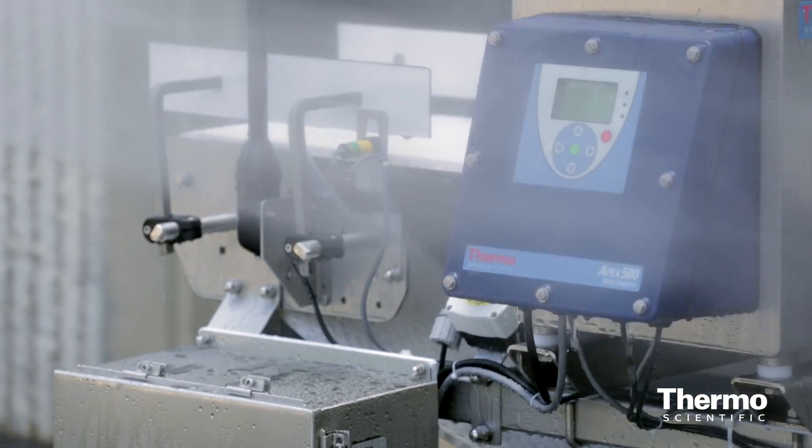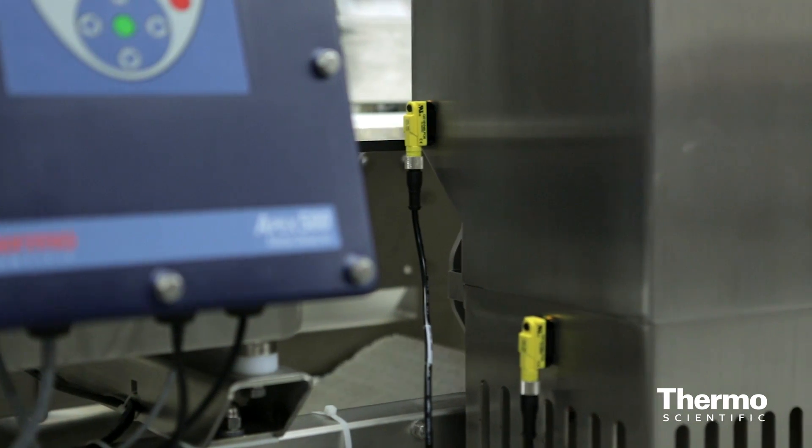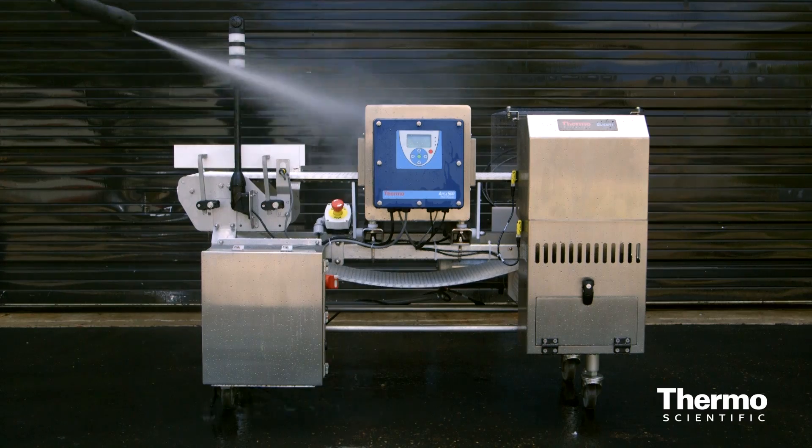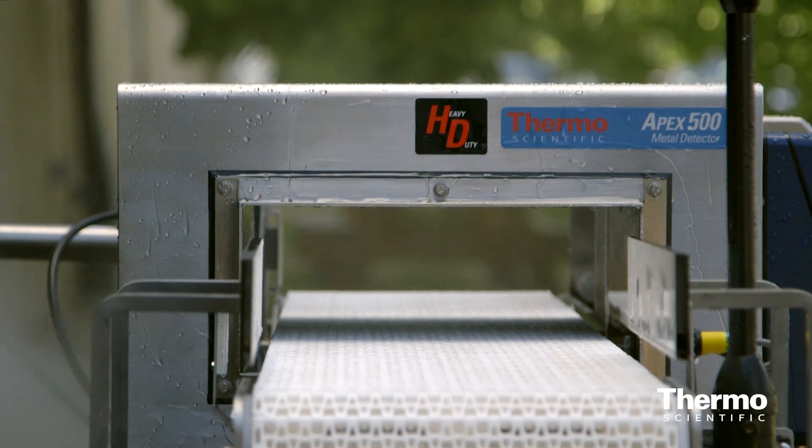How rugged is the APEX HD? The detector case and aperture use non-corroding stainless steel with a special epoxy fill for long-term robustness. It exceeds IP69K wash down and can withstand thermal swings.